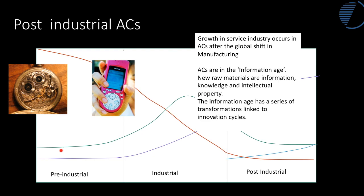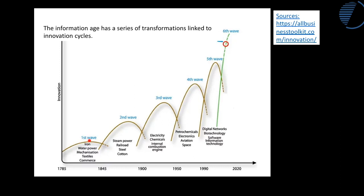As we can see from the purple line on the chart, service sector industries have taken off in advanced countries, which are now in what's called an information age. The raw materials of this age are information, intellectual property, and knowledge. That information age has been linked to a number of innovation cycles — where a product is invented, rises to market, and is then overtaken by the next wave of innovation. These waves include hydroelectric power, then steam power, then the internal combustion engine and the car, then electronics, aviation, and the space industry. Now we may be entering a sixth wave of innovation.